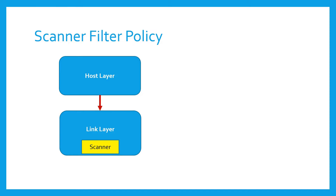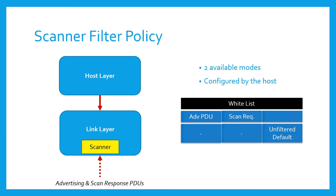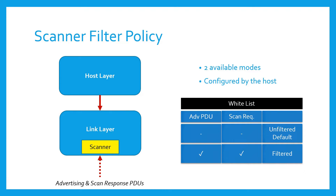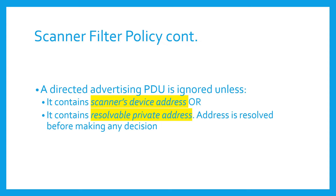Next is the scanner policy. It determines how the scanner's link layer processes the advertising and scan response PDUs. Two modes are available. First is unfiltered, wherein all the advertising and scan response PDUs are processed, meaning the white list is not in use — this is the default mode on reset. Then there is filtered mode, in which the white list is in use. In both modes, a directed advertising PDU is ignored unless it contains the scanner's device address or a resolvable private address.